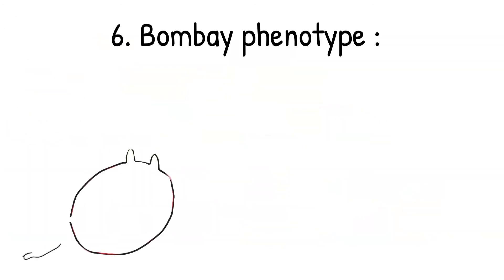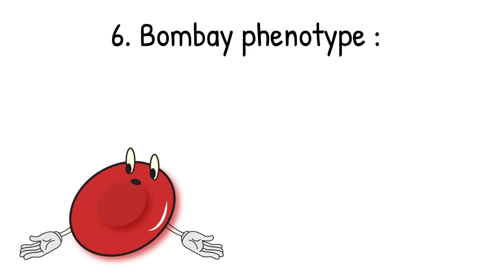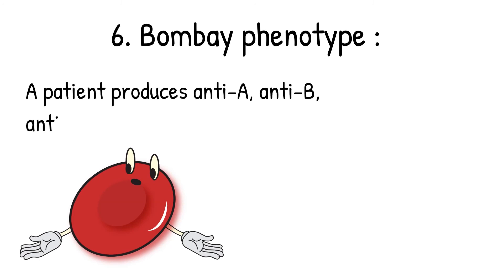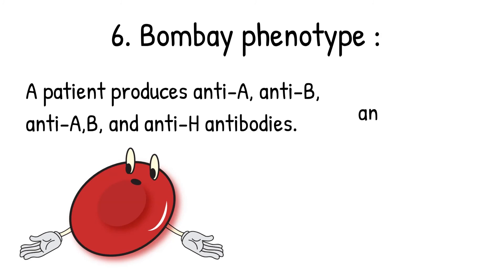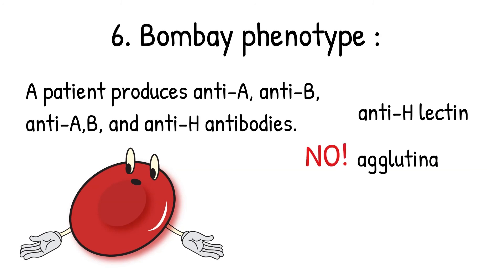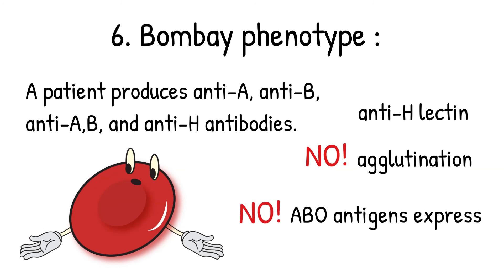Sixth, Bombay phenotype — this is rare, but very interesting; I may make a video about this at a later time. This patient produces anti-A, anti-B, anti-A,B, and anti-H. We can solve this problem by testing the patient's serum with anti-H lectin — no agglutination would be seen. Anti-H is a precursor structure for A and B antigens. Without H antigen, no A or B antigen can be expressed, regardless of ABO genotype.